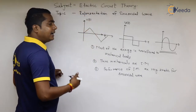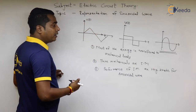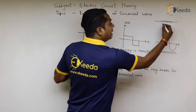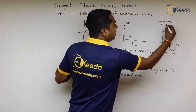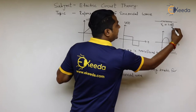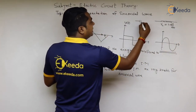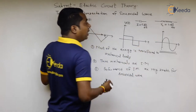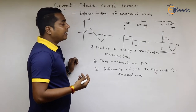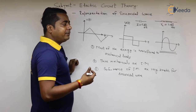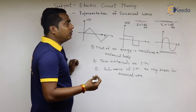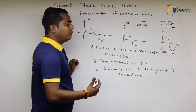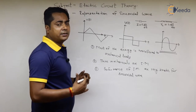Another advantage is if we are using an inductor, the value of VL is equal to L·dI/dt, and for a capacitor, the current is equal to C·dV/dt. If one quantity — current or voltage — is given and we want to calculate the other, we have to perform differentiation, for which the sinusoidal wave is perfect. So now we are going to see how to represent a sinusoidal wave.